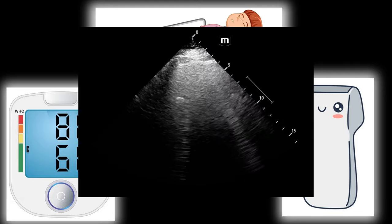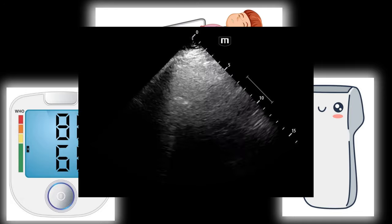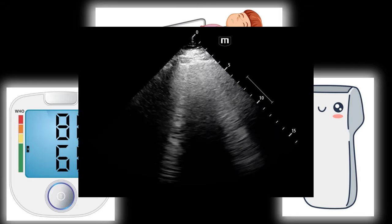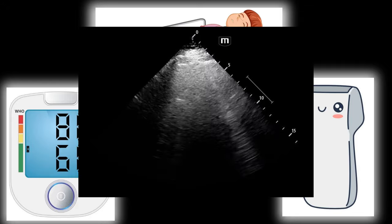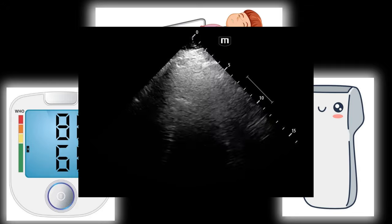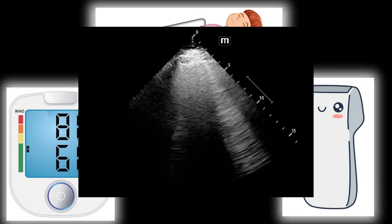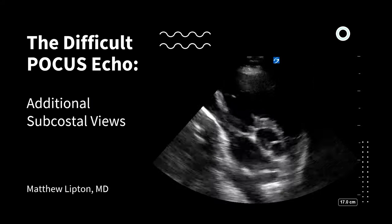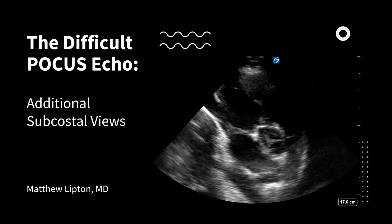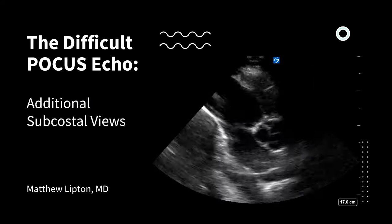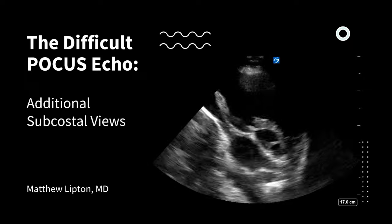You feel frustrated. You move to the apical window — still no view. Now you feel that POCUS is overrated and you won't be able to obtain any hemodynamic information from a bedside echo. This lecture will teach you an algorithm to manage the difficult bedside echocardiogram.